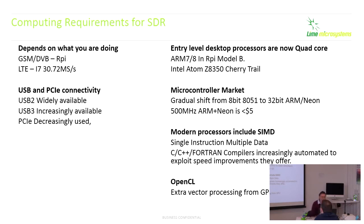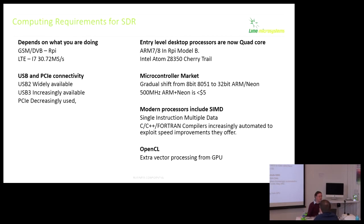Single-instruction multiple-data processors can give quite substantial speed increases. The difficulty is convincing your computer to actually use them — you can write assembler intrinsics in your C program, or try to coerce your compiler to auto-vectorise. It kind of works most of the time. Hopefully in another five years the compiler will just do this automatically and we'll get the speed advantages without the effort.